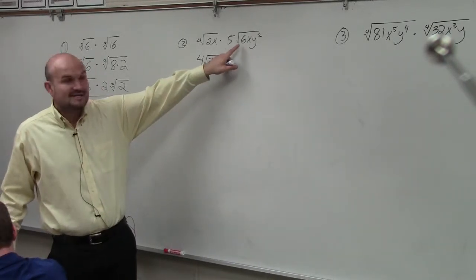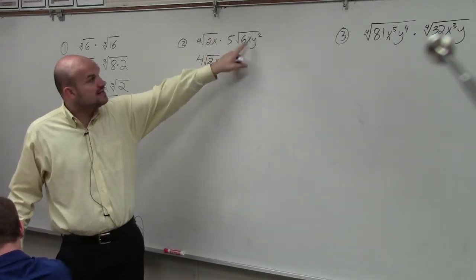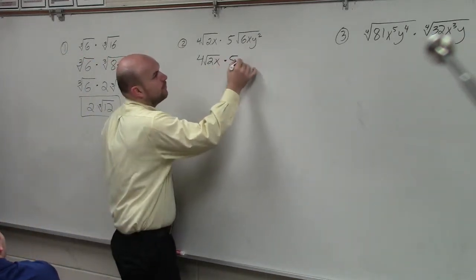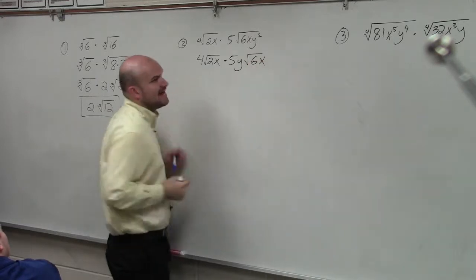Then I try to simplify this. I can't take the square root of 6, I can't take the square root of x, but I can take the square root of y. So that's going to become 5y times the square root of 6x.